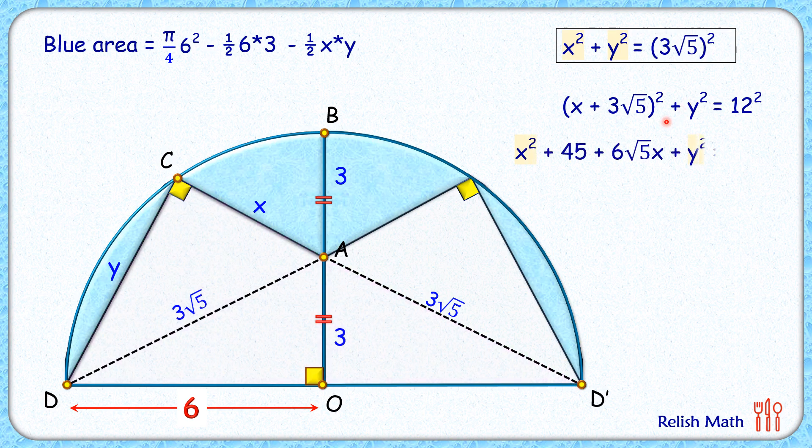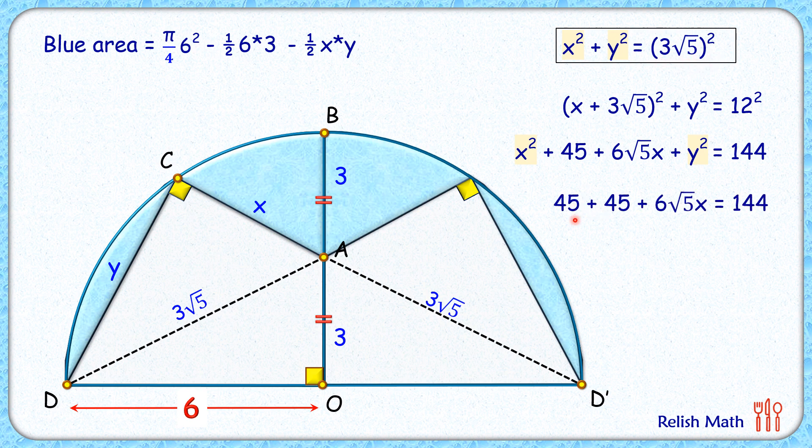Opening up the bracket here and putting the value of x square plus y square as 3 root 5 square. 3 root 5 square is nothing but 45. So putting this value of 45 here and simplifying it, we will get 6 root 5x as 54, or x as 9 upon root 5. Using this value of x in the first equation, we will get y as 12 upon root 5.